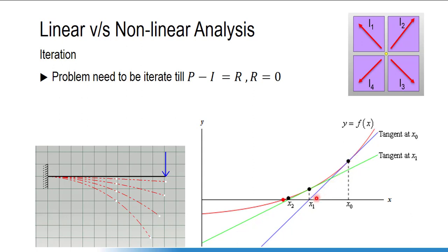A tangent will be created, and at the tangent a normal line will be created on f(x), then again a tangent and normal line will be created, converging toward the solution. The R value is not exactly zero in the iterative process — it has a certain limited value. If R reaches 10^-5 or 10^-7, the solution is assumed to have converged.